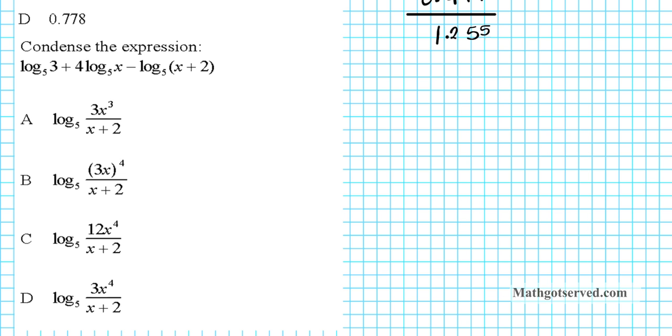So if we apply the properties of logarithms here, we have log base 5 of 3 plus. Now this 4 in front, we can use the power property to power that 4 up and then express that term as log base 5 of x to the 4th power minus log base 5 of x plus 2. Now let's go ahead and condense this expression. We're going to have in the numerator log base 5 of 3 times x to the 4th divided by in the denominator x plus 2.